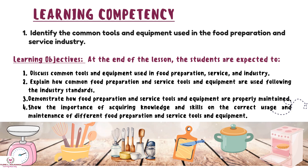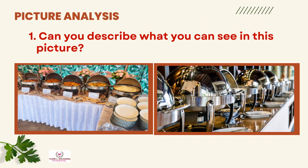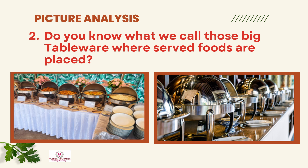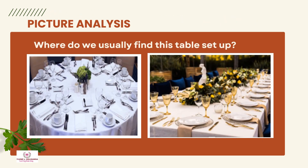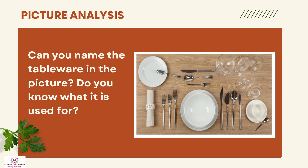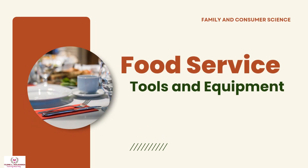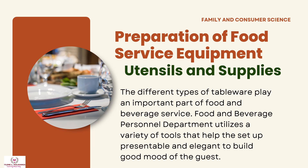Here are the learning competency and learning objectives for this lesson: food service tools and equipment. Picture analysis — can you describe what you can see in this picture? Do you know what we call those big tableware where served foods are placed? Where do we usually find this table setup? Can you name the tableware in the picture? Do you know what it is used for? The different types of tableware play an important part of food and beverage service. Food and beverage personnel utilize a variety of tools that help the setup look presentable and elegant to build good mood for the guest.